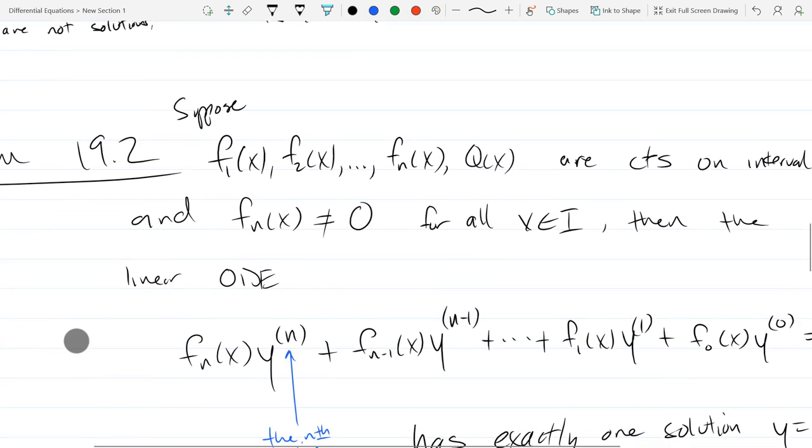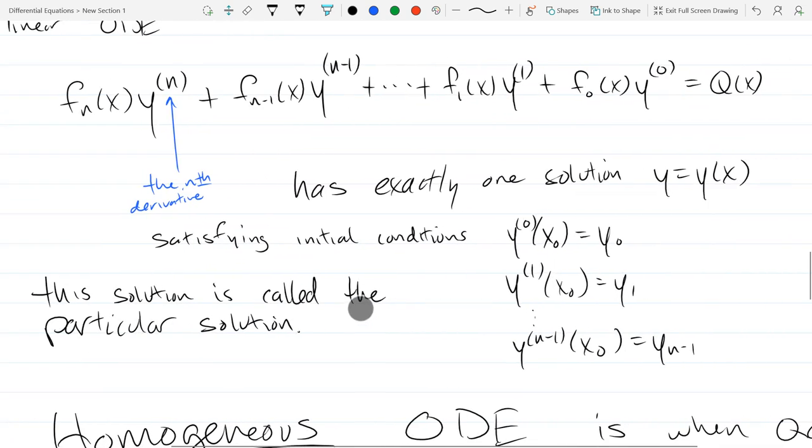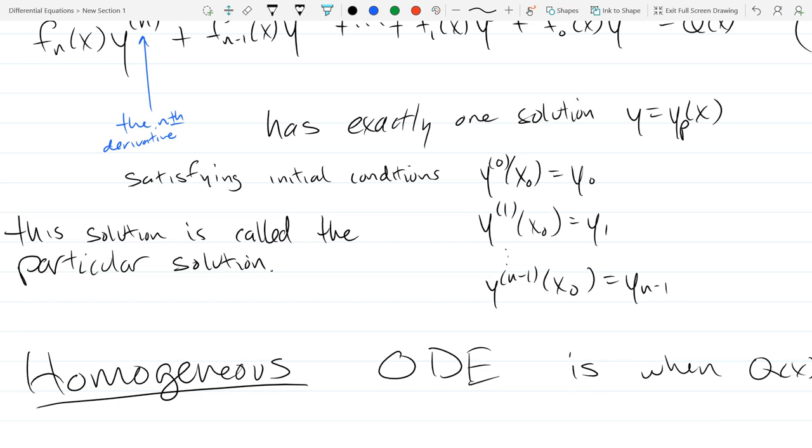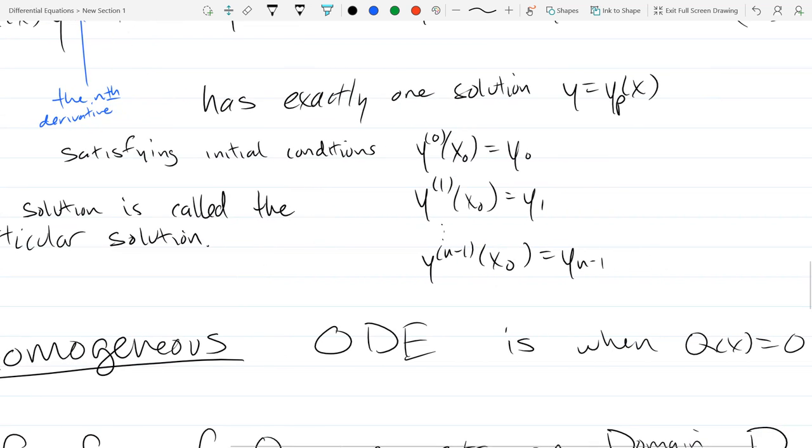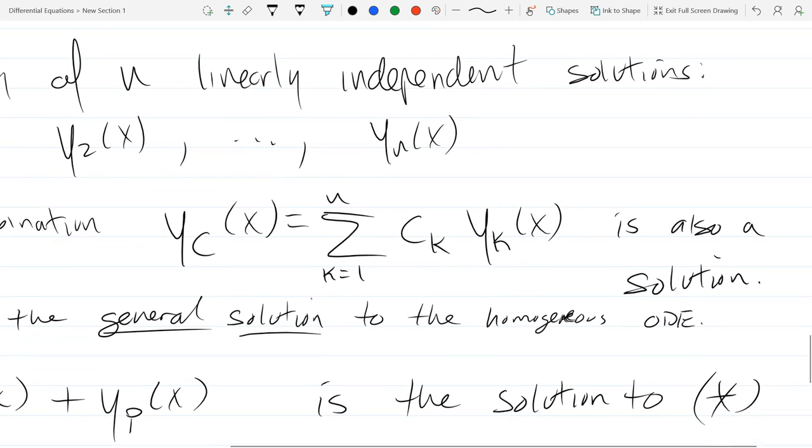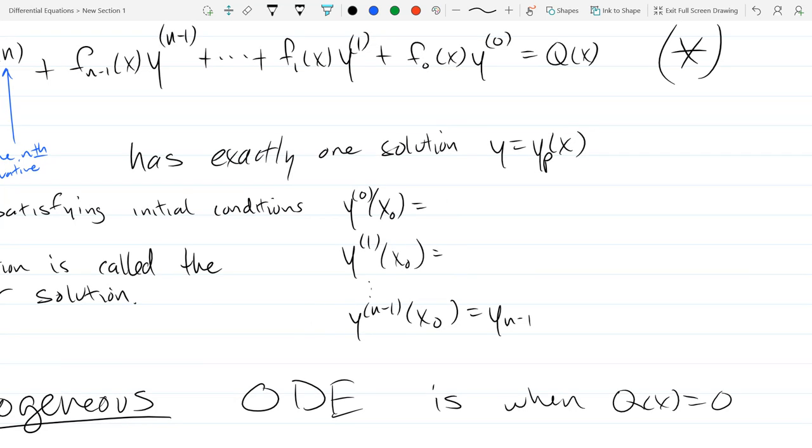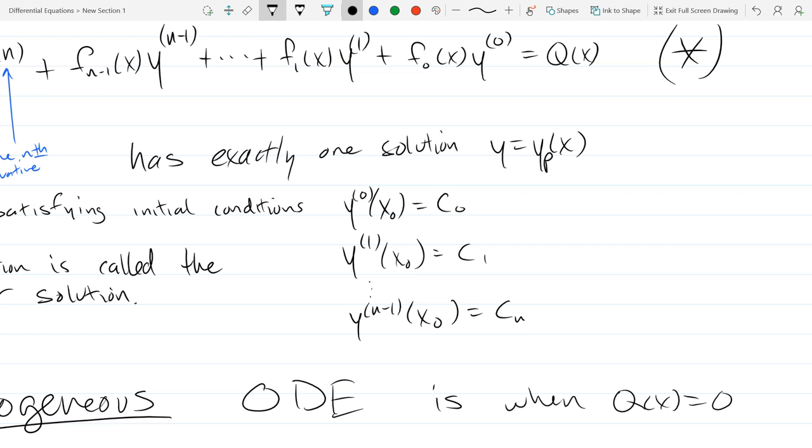So this is the solution to the original with q of x not equal to 0 necessarily. So it's a solution to the non-homogeneous ODE where yp of x is the particular solution. So basically you get the homogeneous solution, the general homogeneous plus the particular. You can add these two together and this will still be a solution. So I scrolled back to theorem 19.2 and I'm going to change around some of the notation a tiny bit. We're going to call it yp of x instead of just y of x.